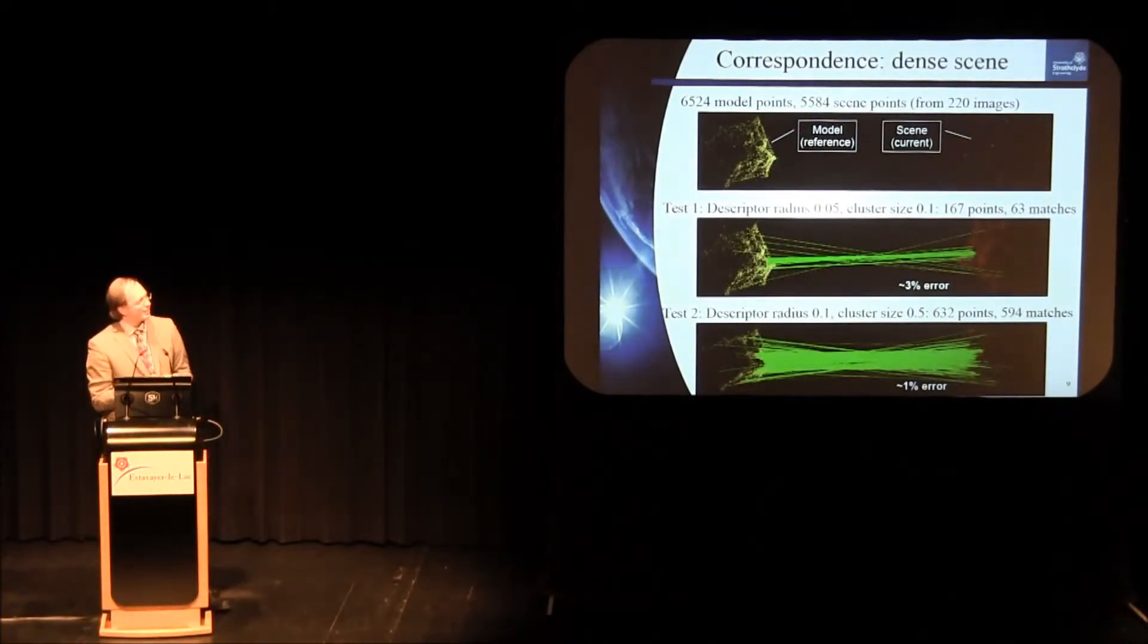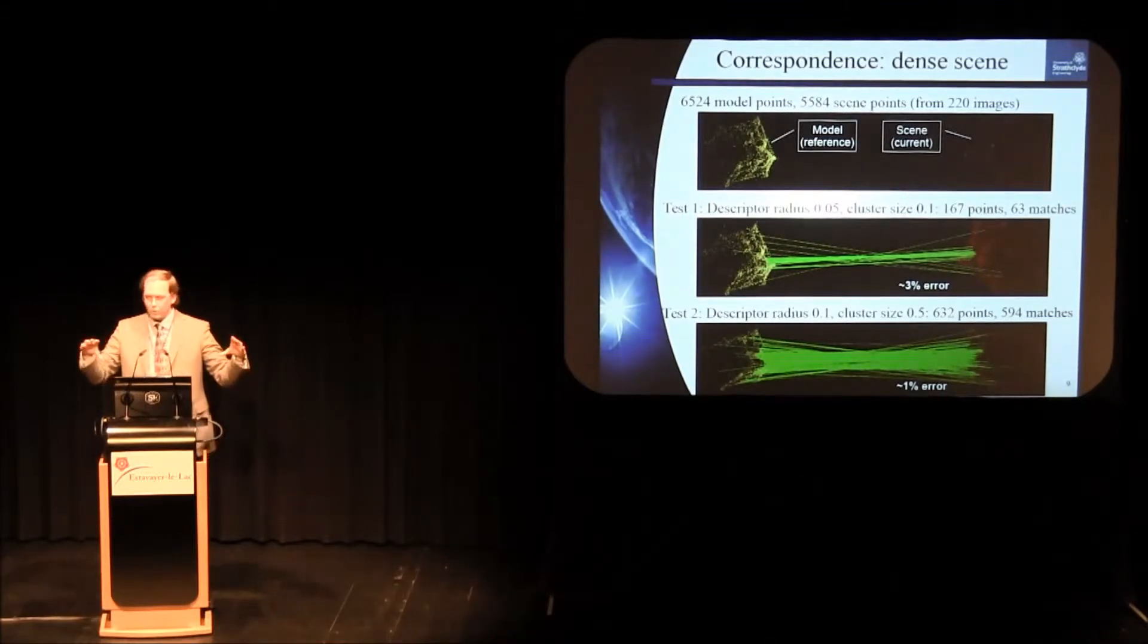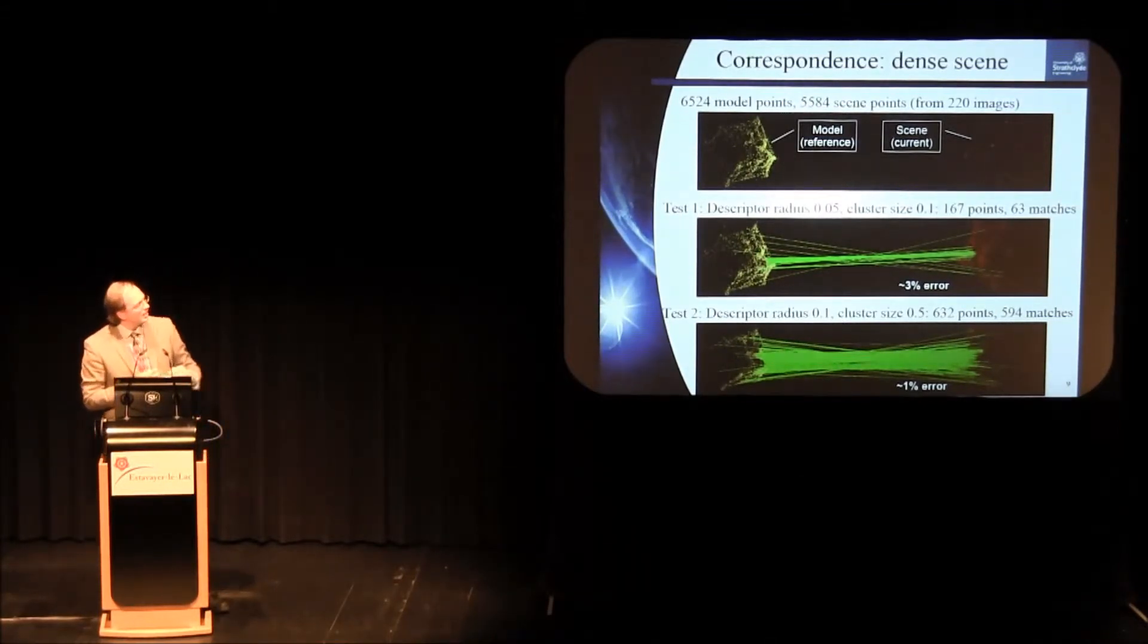So this will become a little clearer in the examples. I've actually run through all of the steps that I've described here using a large set of images, in this case 220 images from a scene where I've got one CubeSat on the right there. And my model that I built from 450 plus images is on the left, so it's got a lot of points in it. When you run this correspondence between the model and the actual scene, I started out with the descriptor radius of 0.05, which is fairly small, cluster size of 0.1. And I got 167 keypoints and 63 matches, which gave me a reasonably good estimate of what I was looking at with 3% error in positioning.